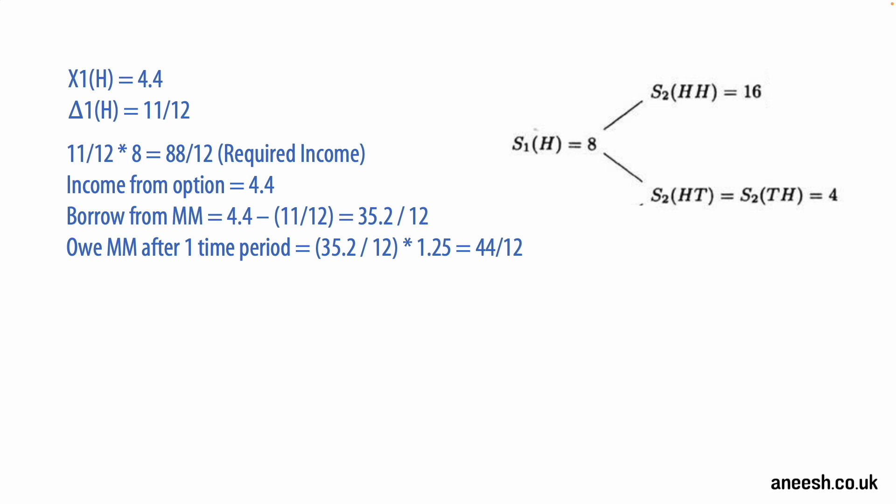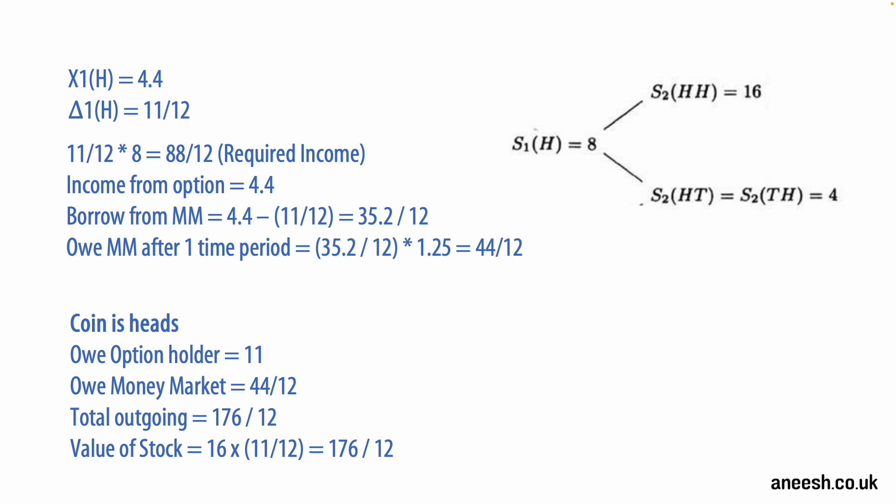If the coin flip is heads we owe the option buyer 11. So in total our outgoings for the option value and the money market is going to be 176 over 12, which is what we owe the option buyer and the money market. The 11 over 12 delta stock that we bought is now worth 16 times 11 over 12, which is also 176 over 12. So we can see that our delta position has cancelled out the outgoings for a heads coin flip.